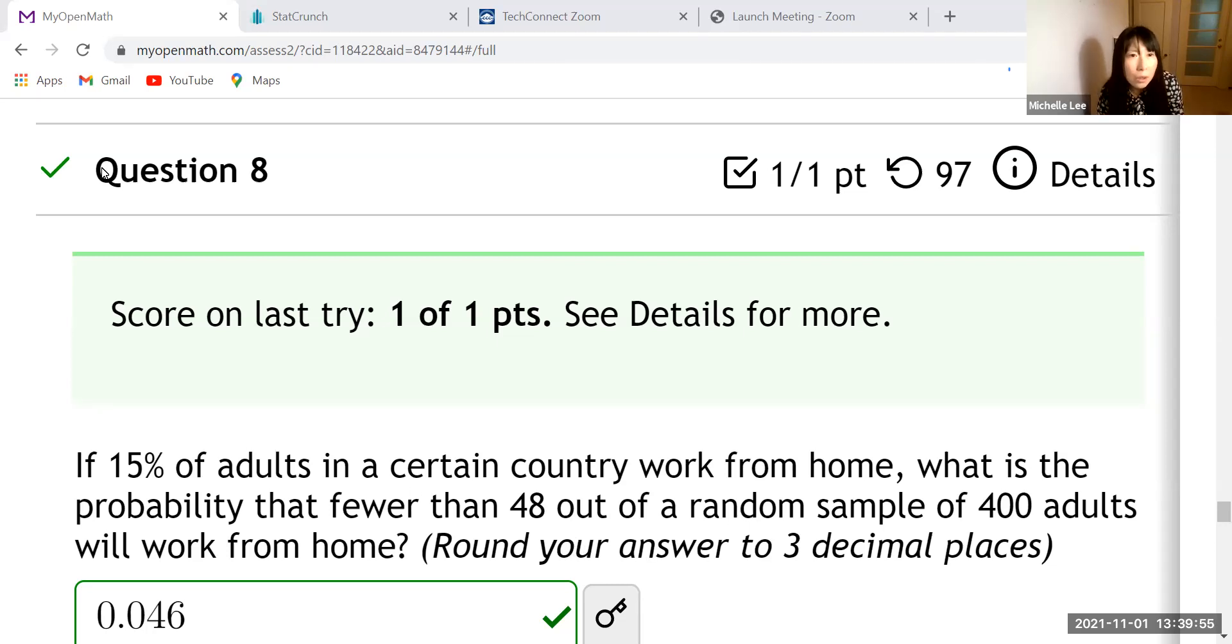So I checked the answer already. Let us do this one. 15%. So this will be population proportion. So population proportion, we denote as P.